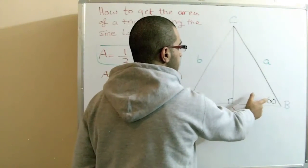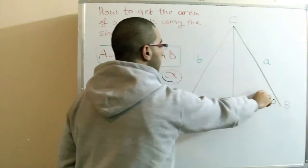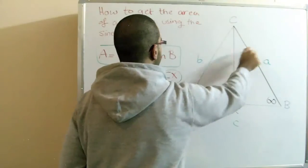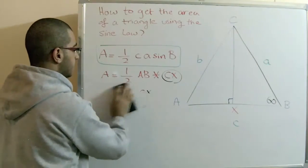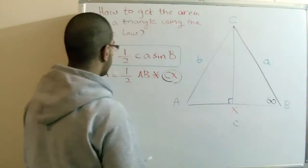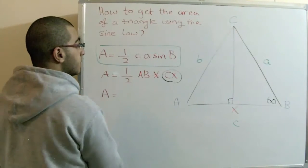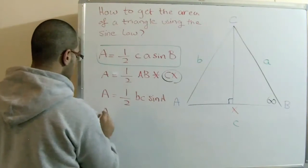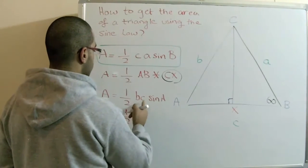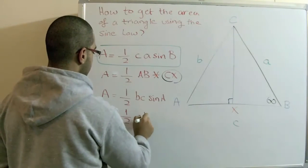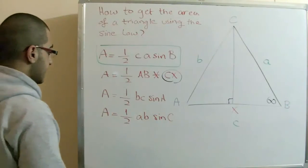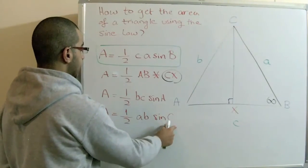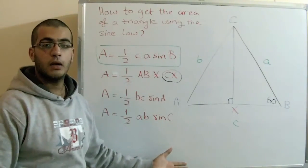If we apply any pair of sides, we get three equivalent formulas: the area equals ½·BC·sine(A), and also ½·CA·sine(B), and ½·AB·sine(C). It's that simple — you write two sides and then take the sine of the angle between them: BC·sine(A), AB·sine(C), and CA·sine(B). This is how to get the area of a triangle using the sine law.